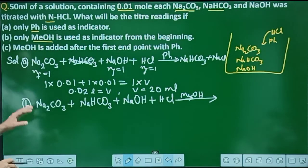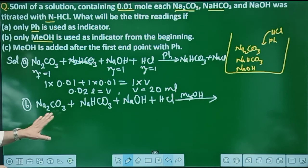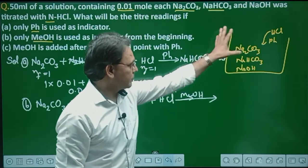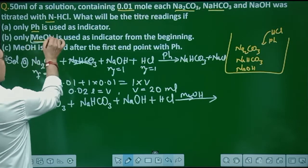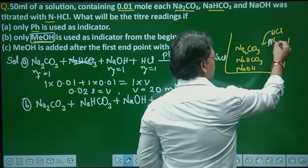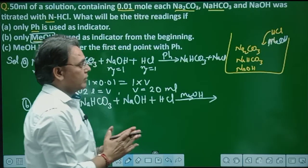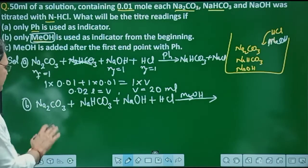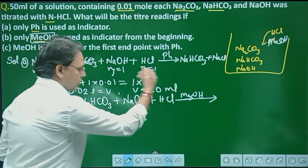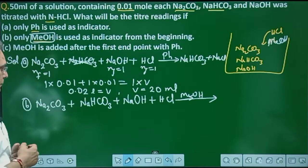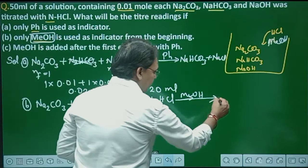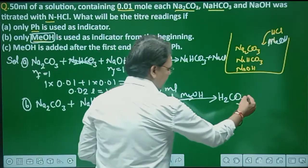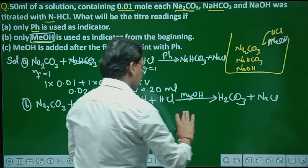For Option B, the same container has Na₂CO₃, NaHCO₃, and NaOH, but now we use methyl orange indicator. Methyl orange has a range near pH 4. This means all three — Na₂CO₃, NaHCO₃, and NaOH — will be fully converted. Na₂CO₃ converts to H₂CO₃, NaHCO₃ also converts to H₂CO₃, and NaOH generates NaCl plus H₂O.